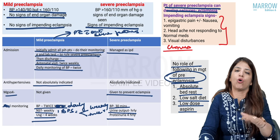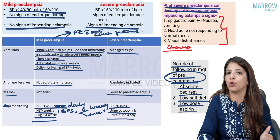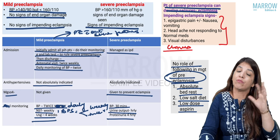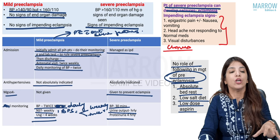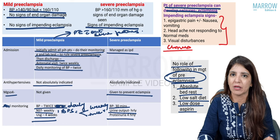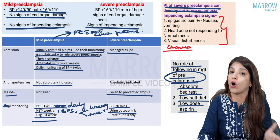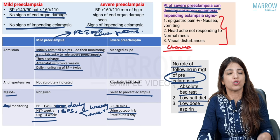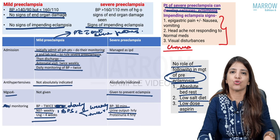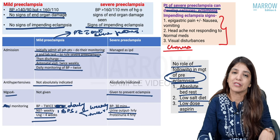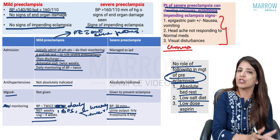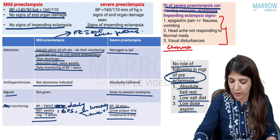Once preeclampsia or high BP has developed, there is no role of aspirin. The role of aspirin is only to prevent preeclampsia from happening. Similarly, like progesterone in preterm labour — progesterone is not a tocolytic once contractions begin; its role is only to prevent preterm labour. In the same way, aspirin's role is to prevent PIH; once the patient has developed high BP, there is no role of aspirin.